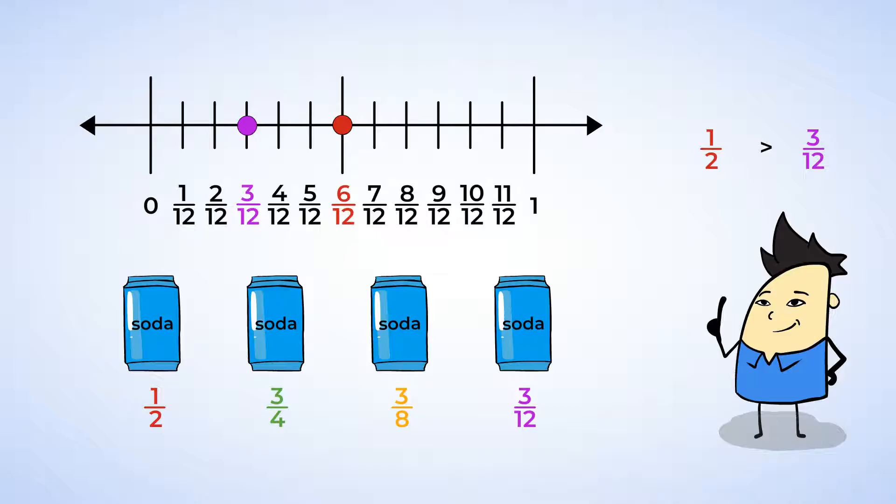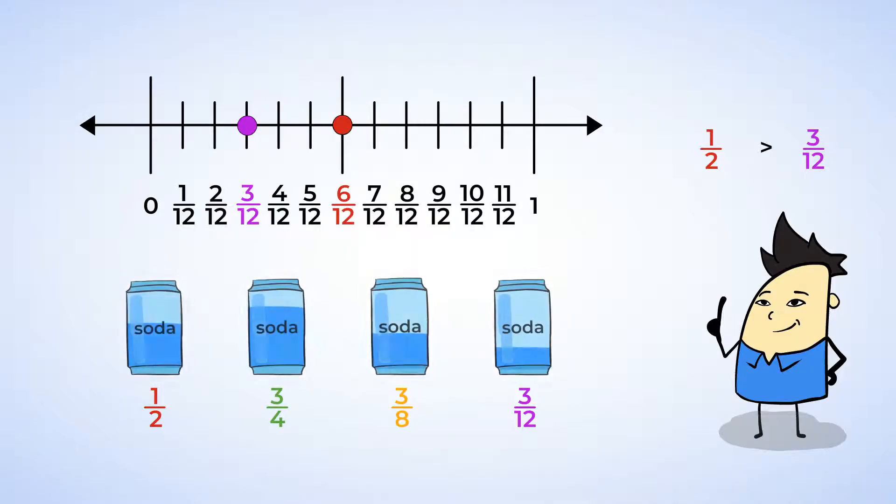What a great job you did comparing fractions to one-half. And look at all the numerators for each of the fractions that we just compared to one-half. They're all the same. When the numerators of fractions are the same, we want to use the denominators to help us compare. And when the denominator is larger, that means that each part is actually smaller, because we've split the whole into more pieces.